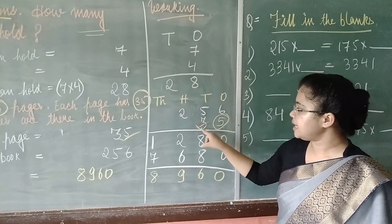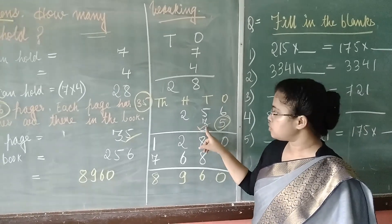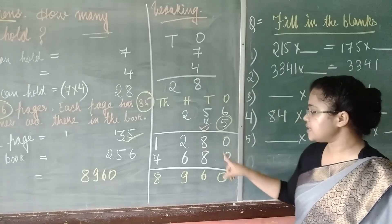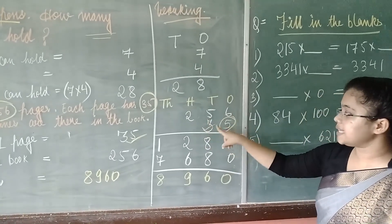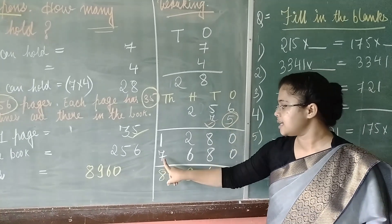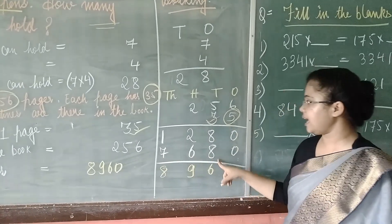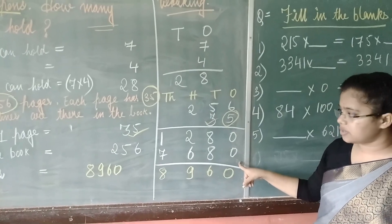Now, you have to multiply by 3. So, 3 is in 10's place. First of all, we will write 0 here. Then when you multiply 256 by 3, you will get 768. And we have already given a 0 here.